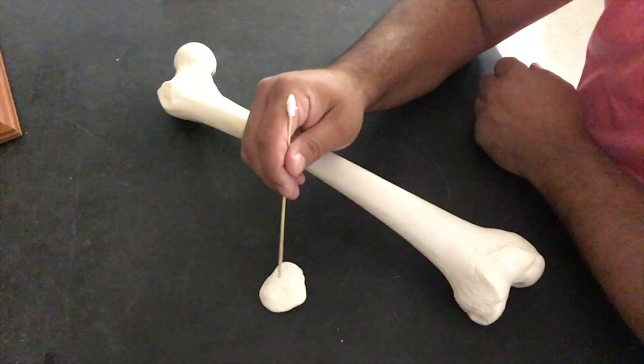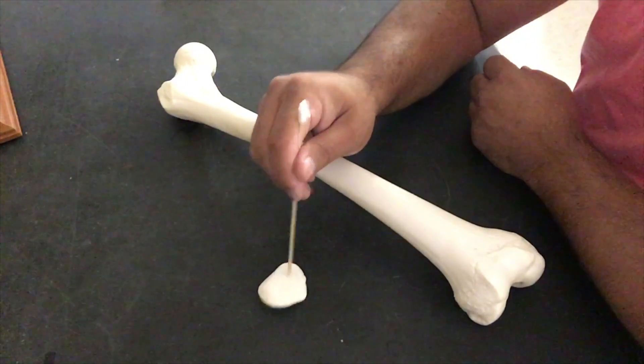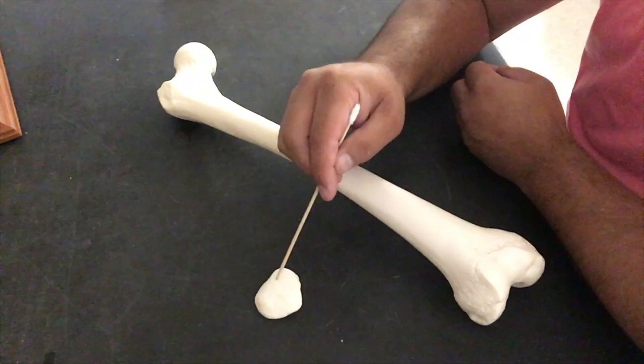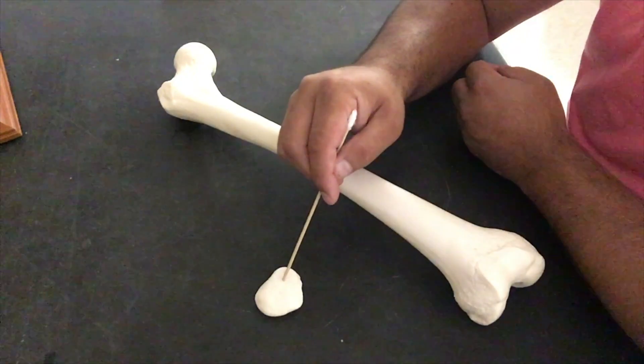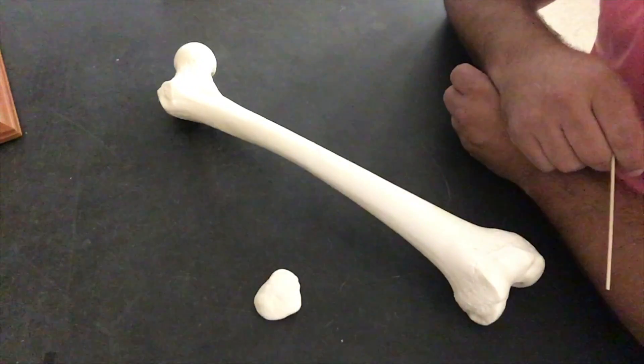We're also going to look at this little sesamoid bone right here called the patella. There isn't much other than identifying it as the patella and understanding that this type of bone, this sesamoid bone, looks like a sesame seed, hence why it's called the sesamoid bone. It grows within tendons.